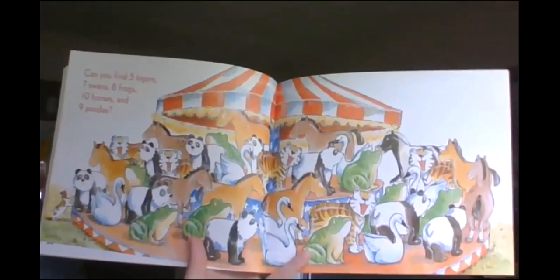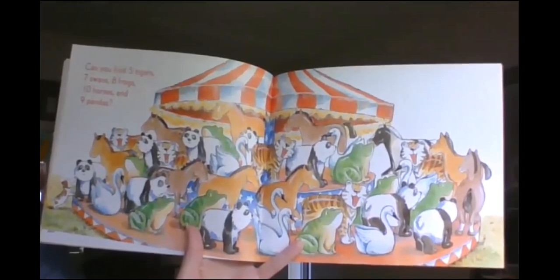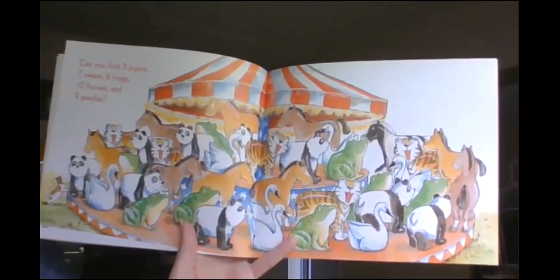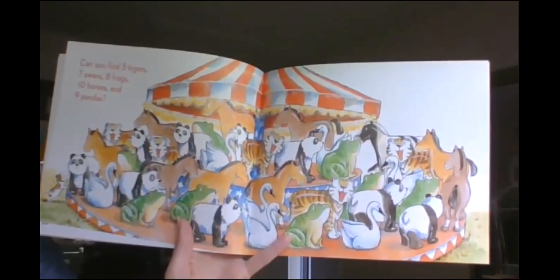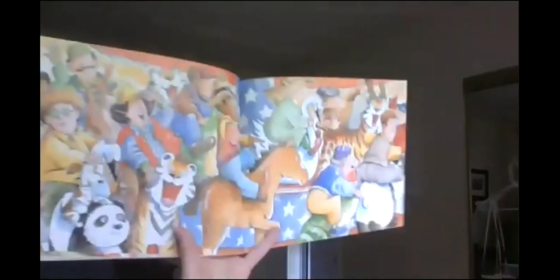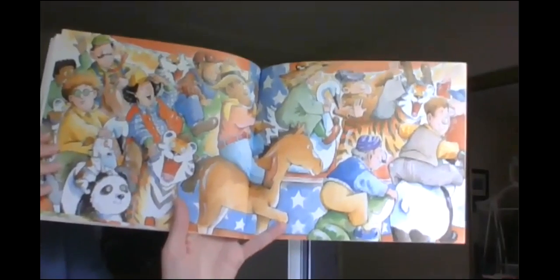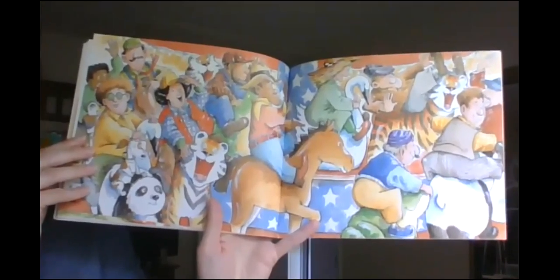Can you find five tigers, seven swans, eight frogs, ten horses, and nine pandas? Yes. So not a circus. Nope. But a carousel. All right.